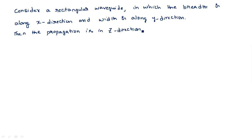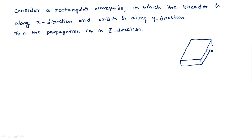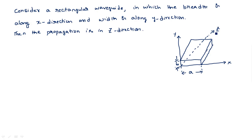Consider a rectangular waveguide in which the breadth is along the x direction and the width is along the y direction, and the propagation is in the z direction. You should definitely mention these three points — in which directions you have taken the rectangular waveguide. Here I will draw the rectangular waveguide. This is the breadth A and this is the width B, and this is the direction in which the wave is propagated, that is the z direction.